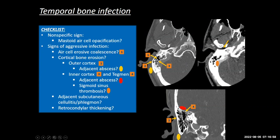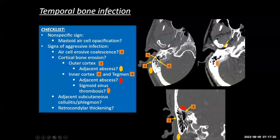What we're looking for is: along with opacification, is there destructive erosive change in those mastoid air cells? Here are nice bony septi producing the air cells in the mastoid. If these start getting destroyed and become coalescent, that is a sign of a complicated mastoid infection — coalescent mastoiditis.